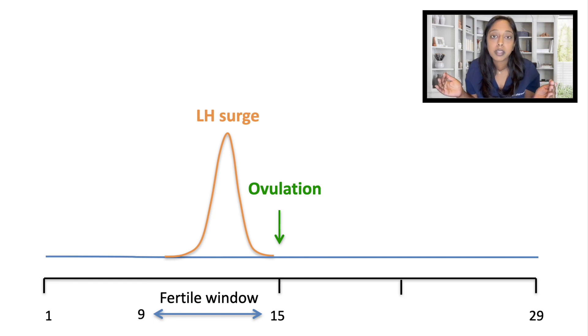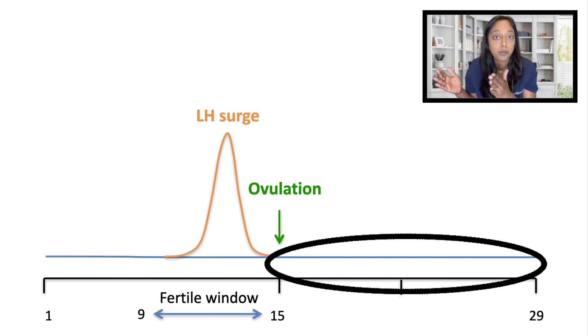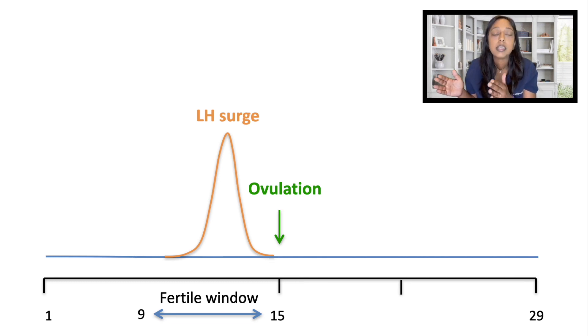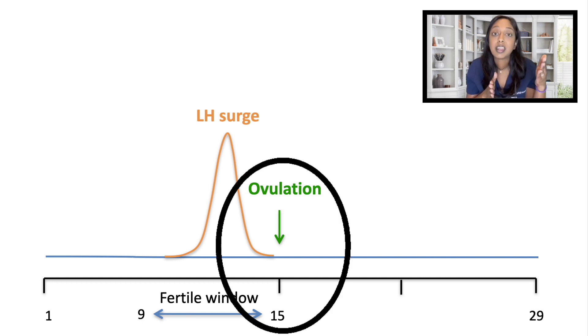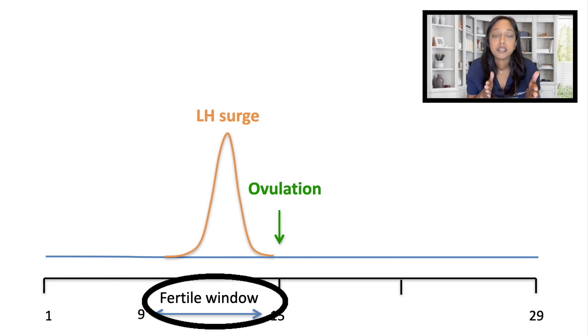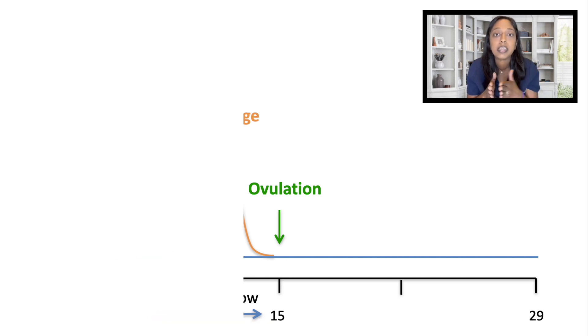If cycles are regular, this is reassuring that ovulation is occurring and we can calculate when the fertile window would be. You take your average cycle length — let's say it's 29 days — and the luteal phase, the time frame after ovulation and before the next period, is consistent in its duration at about 12 to 14 days. So if your cycles are 29 days, subtract 14 and that is the approximate time of ovulation. Subtract another six days and that is the fertile window — the six-day interval leading up to ovulation.